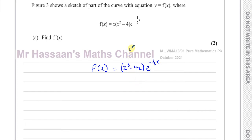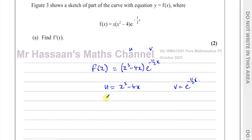So I can call one of them u and the other one v. I'll let u equal x cubed minus 4x, and let v equal e to the power of minus a half x. So I'm going to find what u' is, which is 3x squared minus 4. And I'm going to find what v' is.